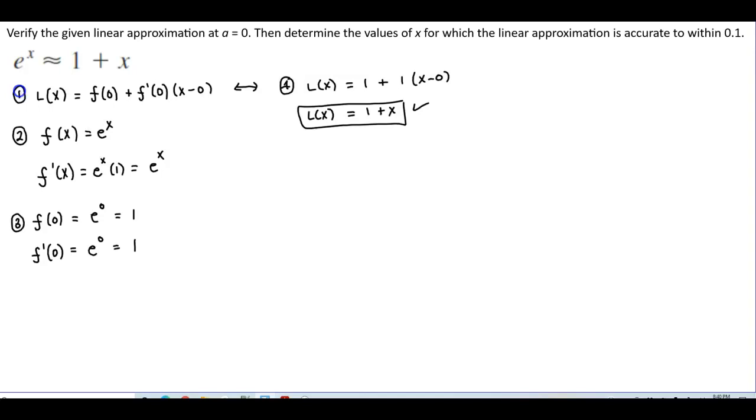So now what we want to do is find and determine the values of x for which the linear approximation is accurate to within 0.1. So that means we want 1 plus x to be in between e to the x plus 0.1 and e to the x minus 0.1.